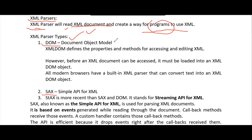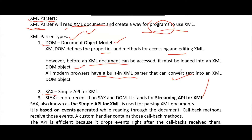Coming to the first one, which is DOM — Document Object Model. The XML DOM defines the properties and methods for accessing and editing the XML. Before an XML document can be accessed, it must be loaded into an XML DOM object. Today all modern browsers have got built-in XML parsers, be it DOM, SAX, STAX, or anything. These built-in parsers will convert the text into an XML DOM object.